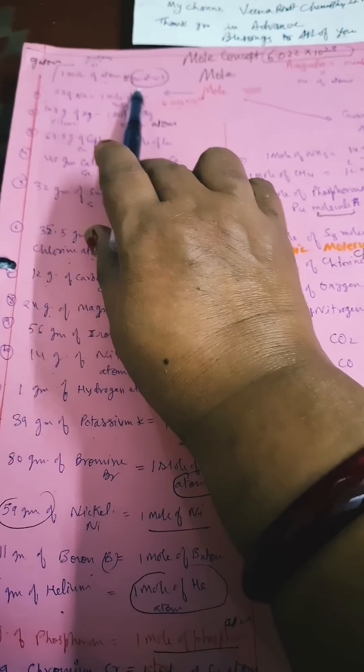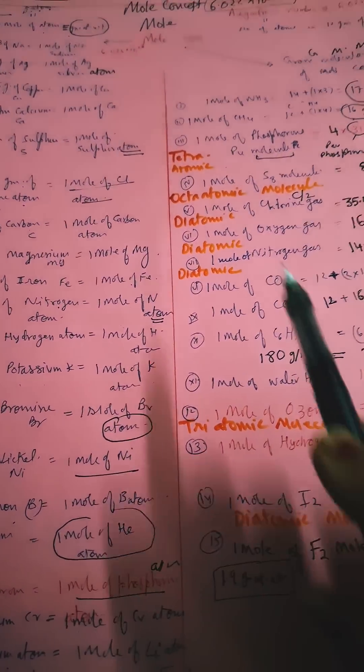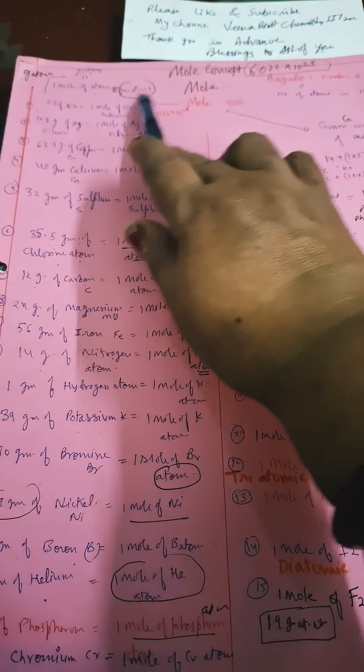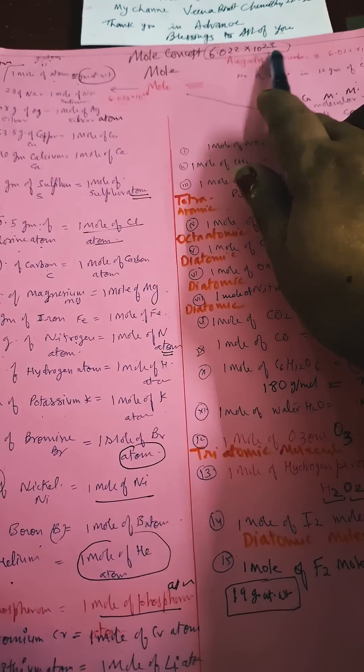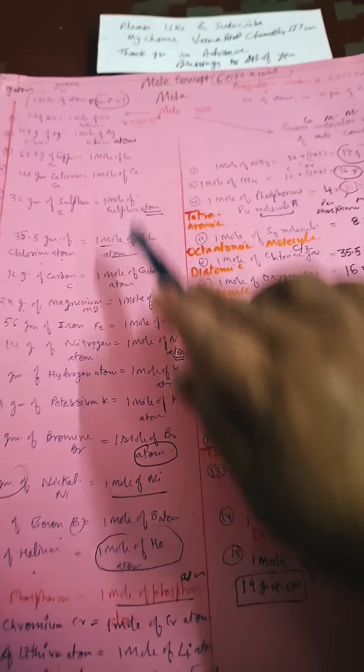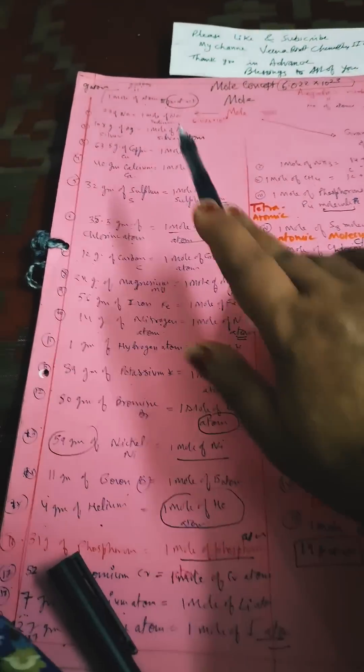We call it gram atomic weight also because it is represented in grams, and it is related with one mole - that is 6.022 × 10²³ - means one mole of any species.